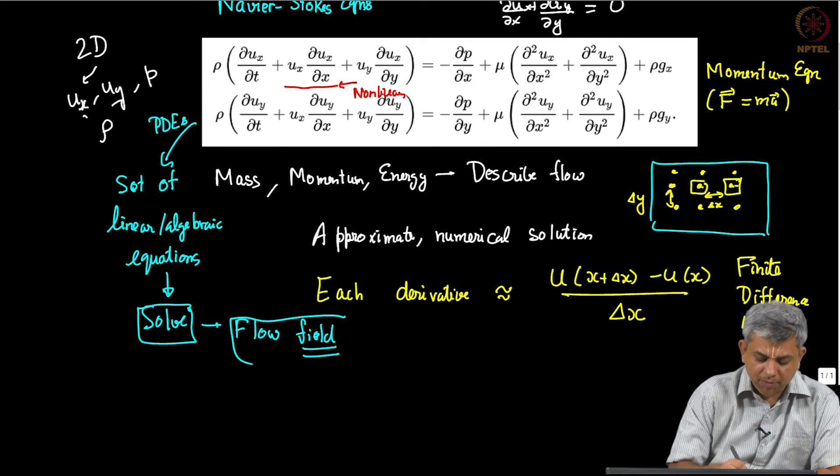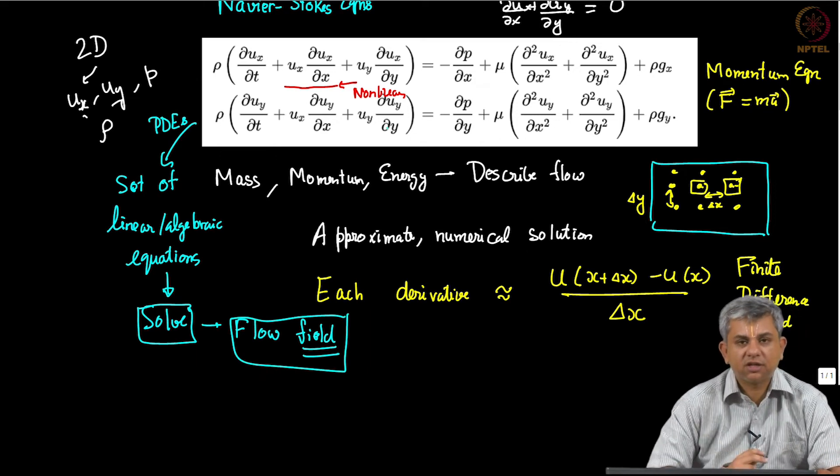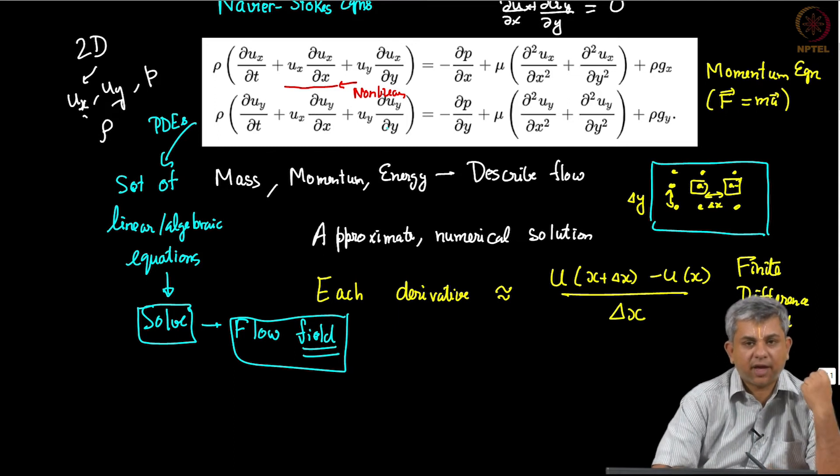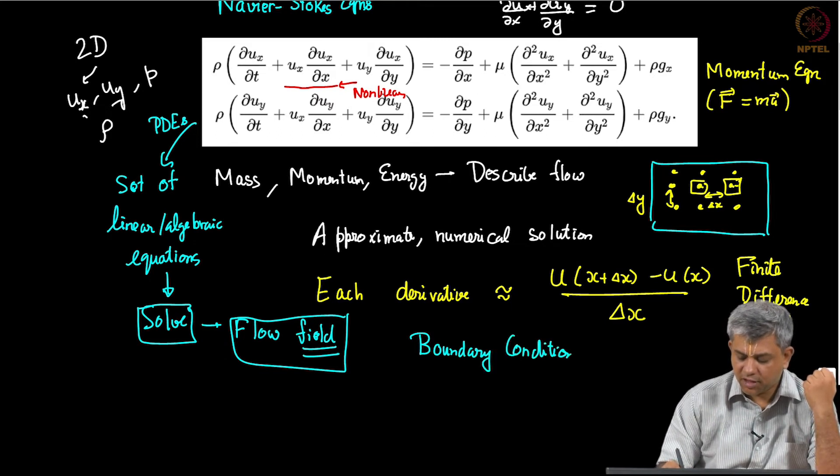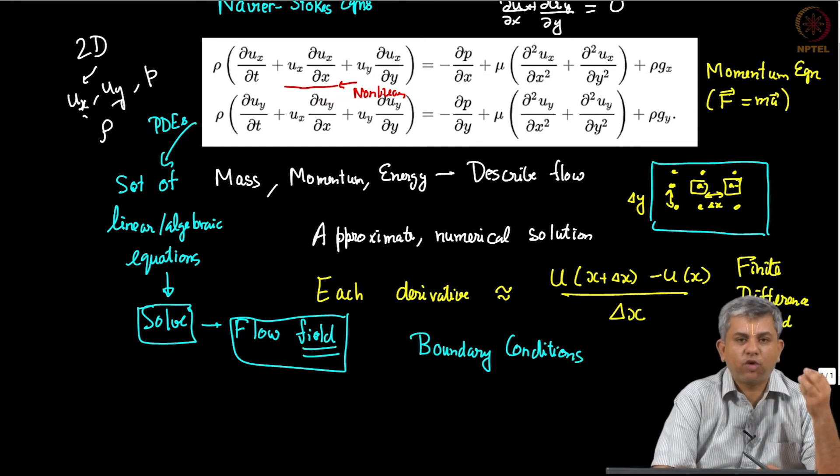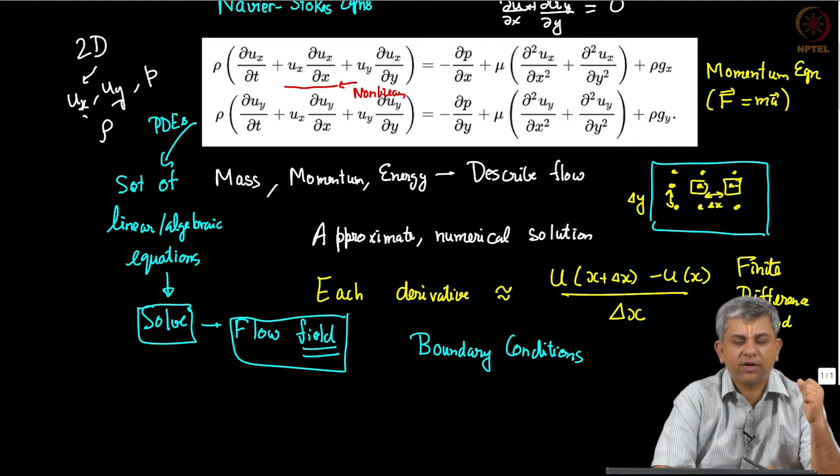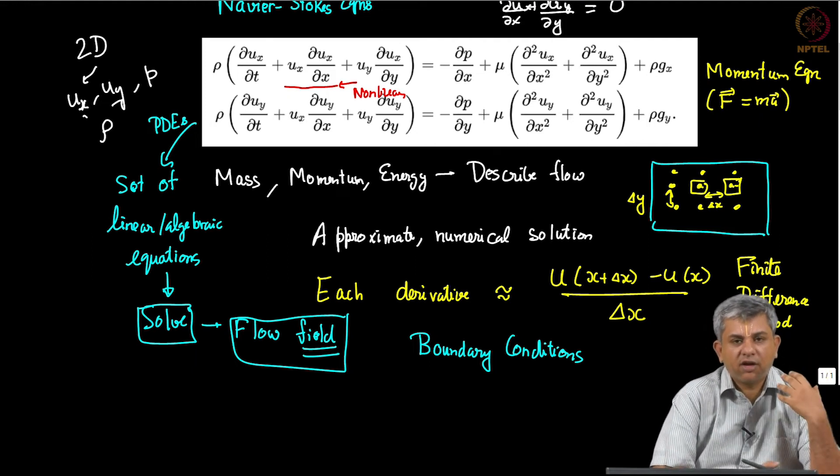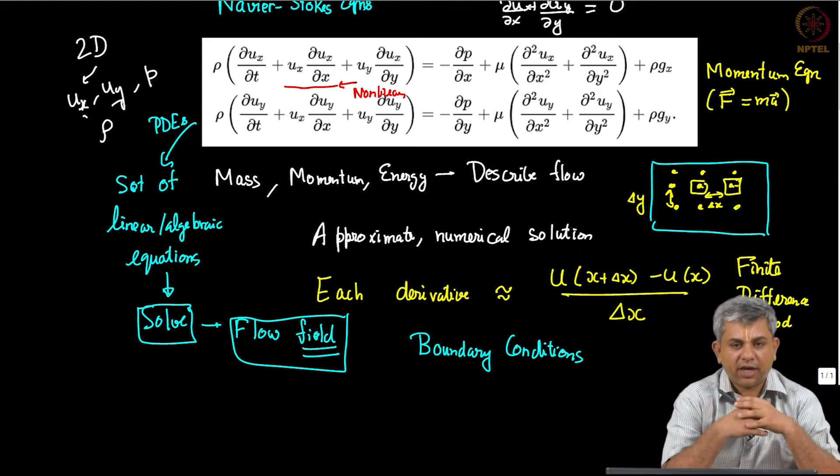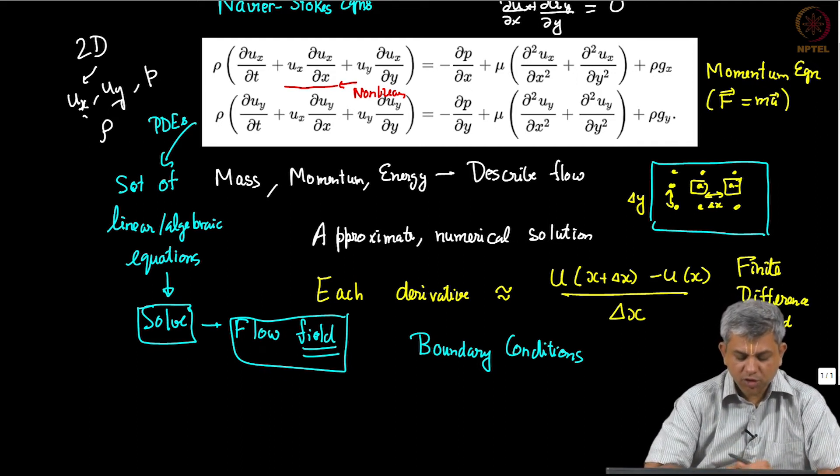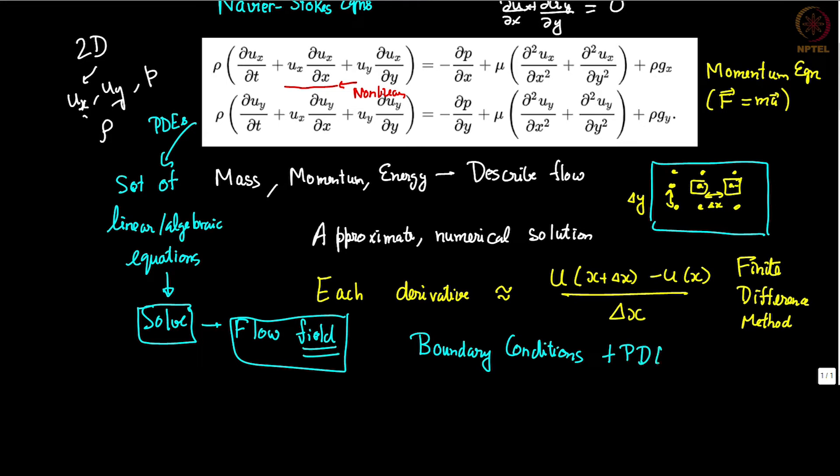This is how you get what is known as a flow field. Please underline the word 'field'—field means you actually have a distribution of the same quantity everywhere. So this is our aim: our aim is to start from the equations, and I will tell you the specific circumstance that I am in. The circumstance is usually given by boundary conditions. Obviously, even though it is the same equations, the flow past an aircraft is going to look different from the flow past a cycle, different from the flow past a man. And what decides it? What the boundary of the object is like. So these are called boundary conditions. So PDEs plus boundary conditions passed through the finite difference method give us the solution.